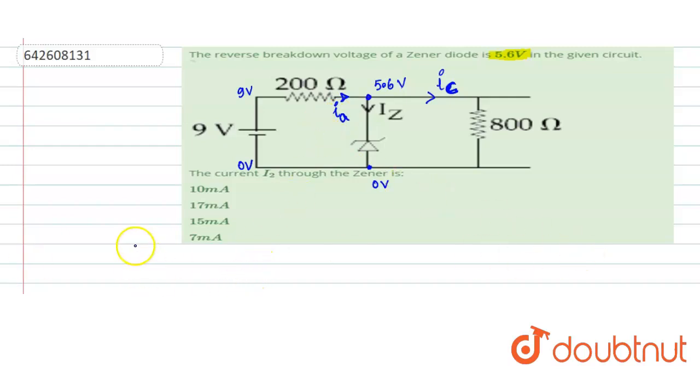Using Kirchhoff's law, incoming current IA should equal IZ plus IC, where IA is the current through 200 ohm and IC is the current through 800 ohm.